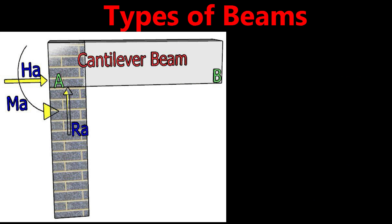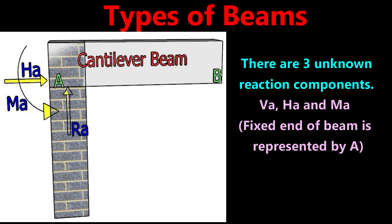The second type is the cantilever beam. One end of the beam is constructed into the wall and the other end is free without any support. This type is called a cantilever beam. There are three unknown reaction components at the fixed end and no reaction component at the free end.